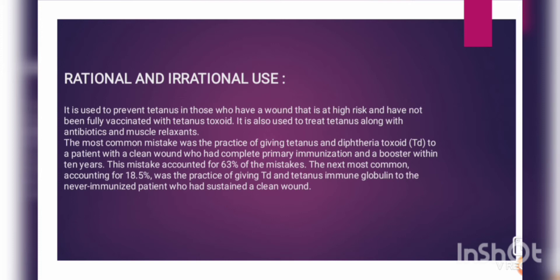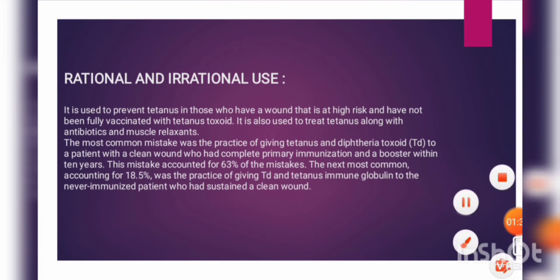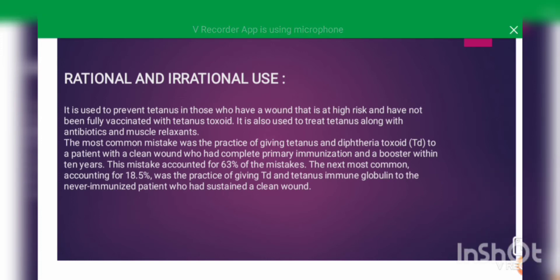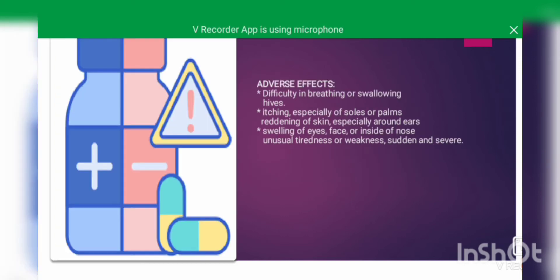Regarding rational and irrational use, the most common mistake was the practice of giving tetanus-diphtheria toxoid to a patient with a clean wound who had complete primary immunization and a booster within 10 years. This mistake accounted for 63% of the mistakes. The next most common mistake, accounting for 18.5%, was giving diphtheria toxoid and tetanus immunoglobulin to a never-immunized patient who had sustained a clean wound.